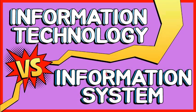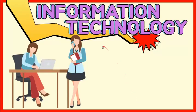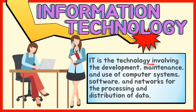In this video, we will explore the difference between information technology and information system. Let's start by defining information technology. It is the technology involving the development, maintenance, and use of computer systems, software, and networks for the processing and distribution of data.